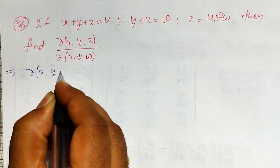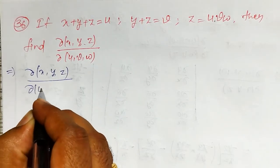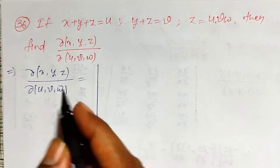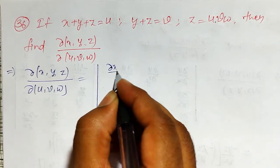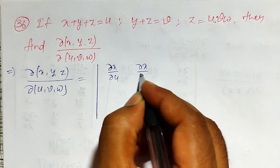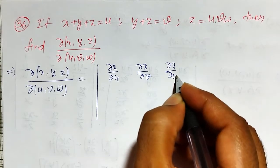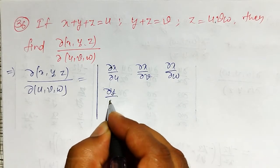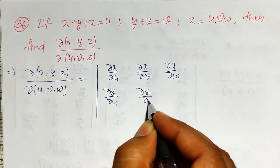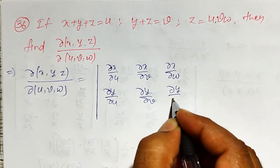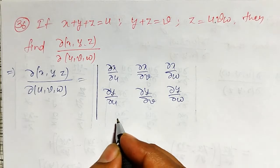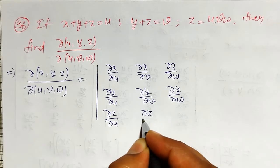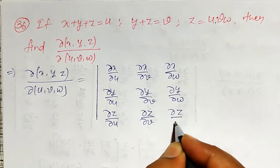The Jacobian of x, y, z with respect to u, v, w is defined as the determinant where the first row elements are ∂x/∂u, ∂x/∂v, ∂x/∂w. The second row elements are ∂y/∂u, ∂y/∂v, ∂y/∂w. Similarly, the third row elements are ∂z/∂u, ∂z/∂v, ∂z/∂w.